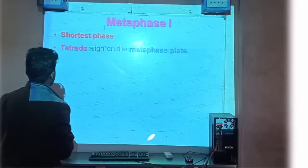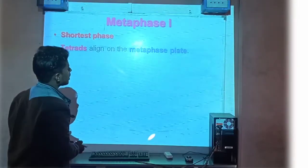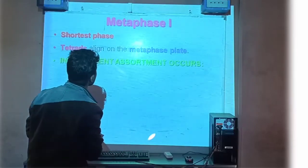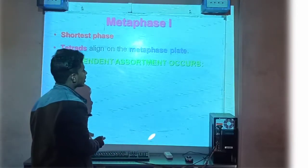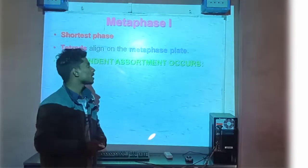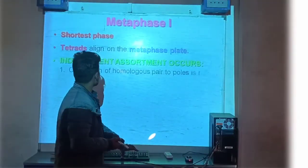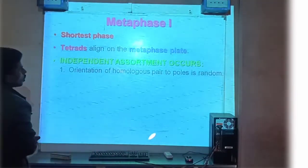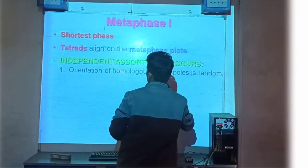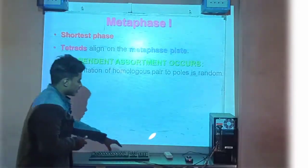Metaphase में tetrads की बारे में आपने सुना होगा — tetrads align on the metaphase plate होते हैं। Next, that is the independence assortment occurs — chromosomes में independence assortment होता है। That is the orientation of the homologous pair to pole is random — homologous pair का pole की ओर orientation random होता है।